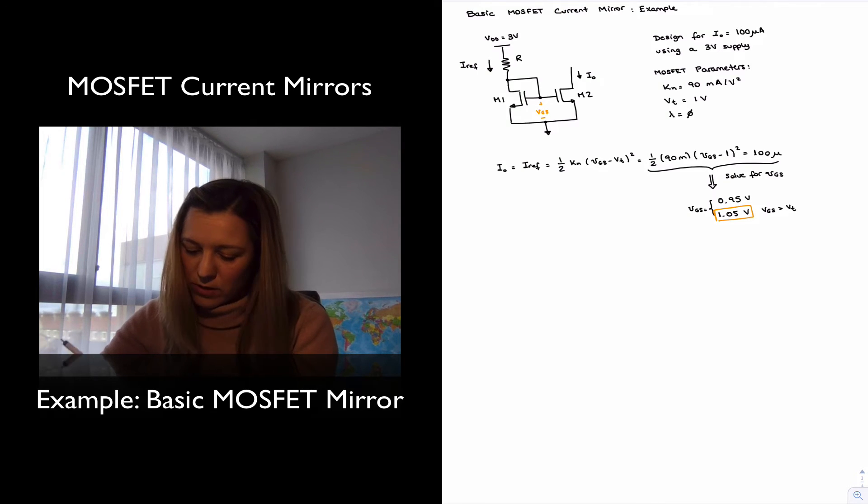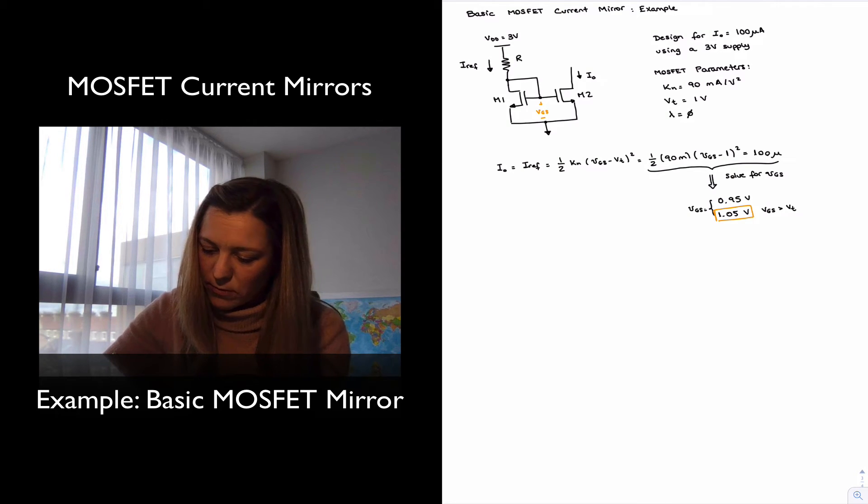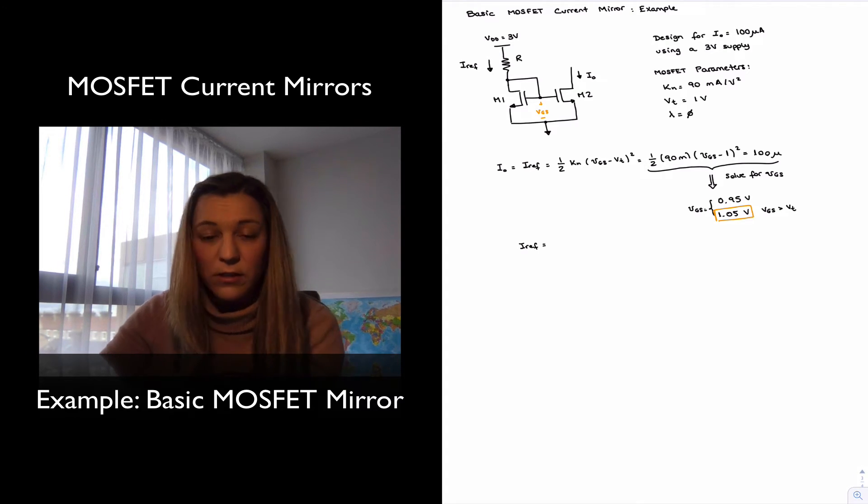Alright, so now I can just enter that into my expression. And I'll notice that my reference current, I have expressed it in terms of the VGS voltage, but it's also the current flowing through resistor R. And so because of that, it's equal to VDD minus VDS for transistor M1. But notice since the drain of M1 is connected to the gate, that's also VGS, that voltage, divided by R.